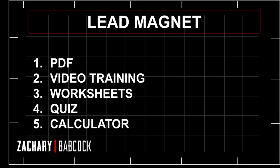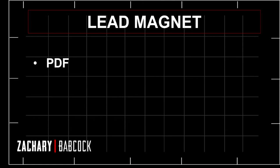Now that was the four components. Let's get into the actual types of lead magnets you can create. You can create a PDF download, a video training, worksheets, a quiz calculator, and so on. A PDF download is something that you would write out — some people learn better by reading. You write it out as something they can download, and you can create this in canva.com or Microsoft Word.